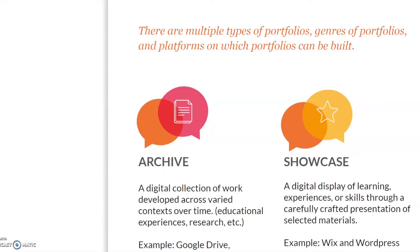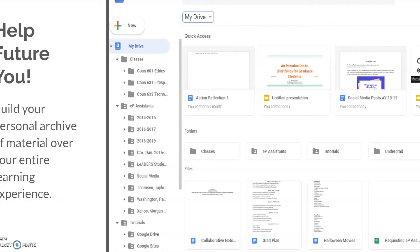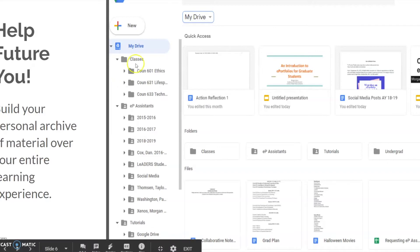There are two types of ePortfolios: your archive and your showcase. With your archive, here at ODU we use Google Drive, but you can also use Dropbox and OneDrive. For showcase, we use Wix and WordPress. Today I am going to show you how to use WordPress. Here is an example of a Google Drive archived ePortfolio where everything is put together and organized in folders.